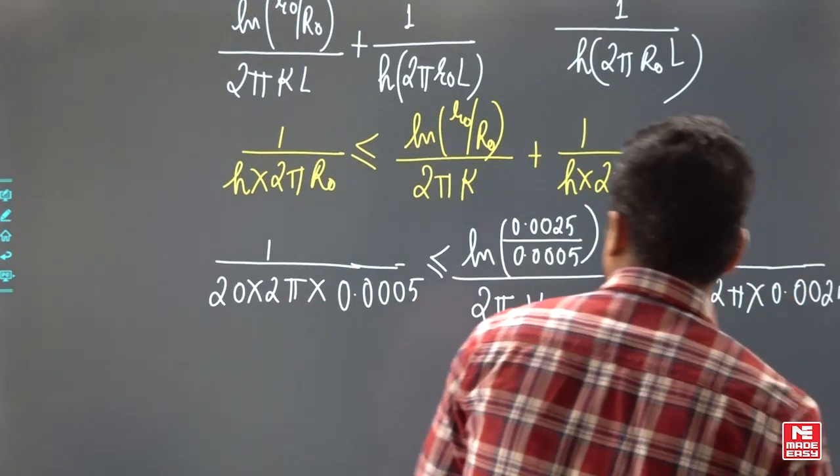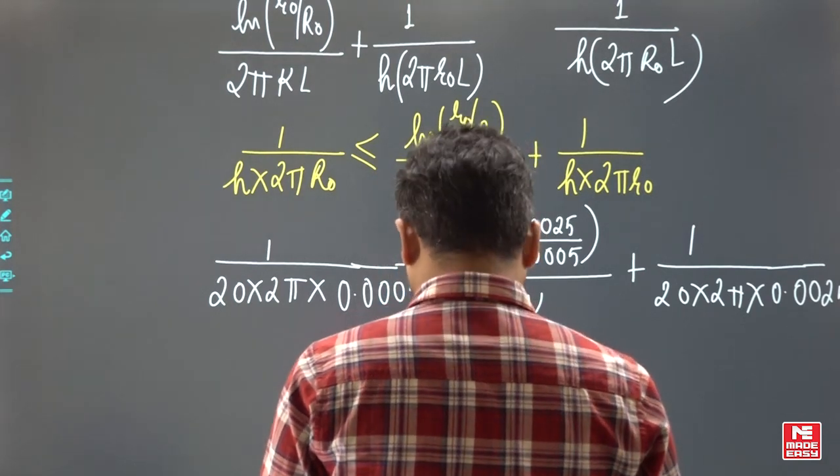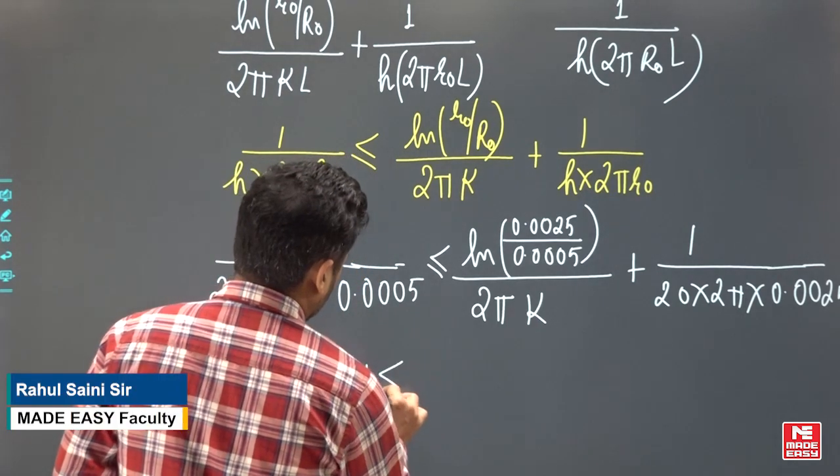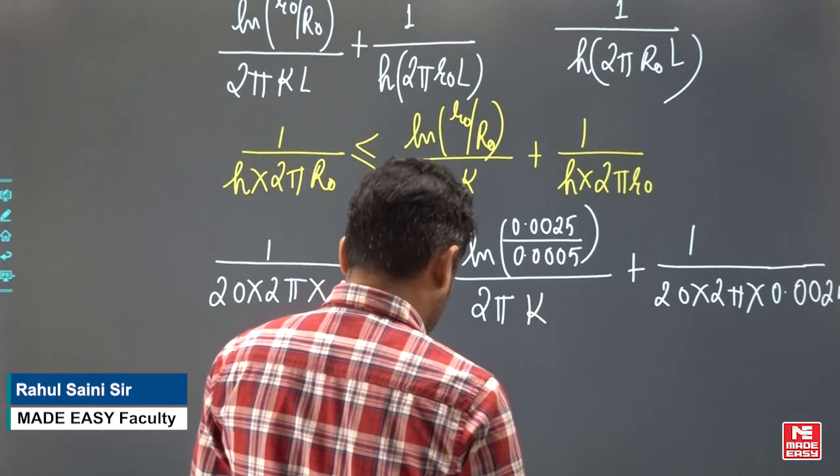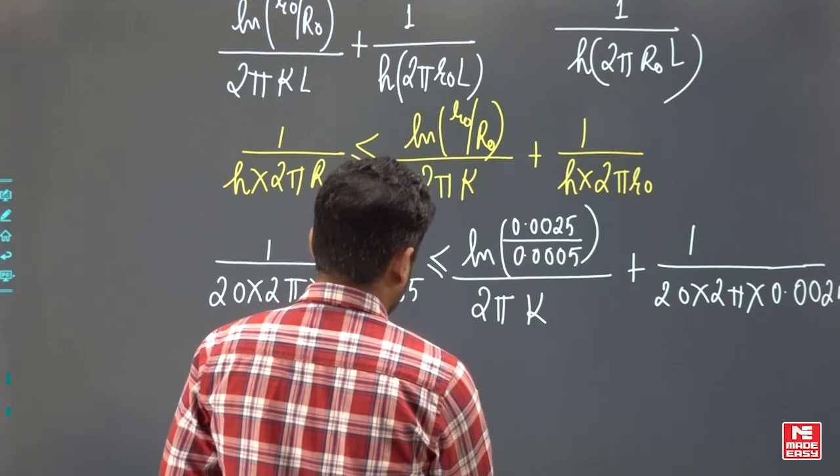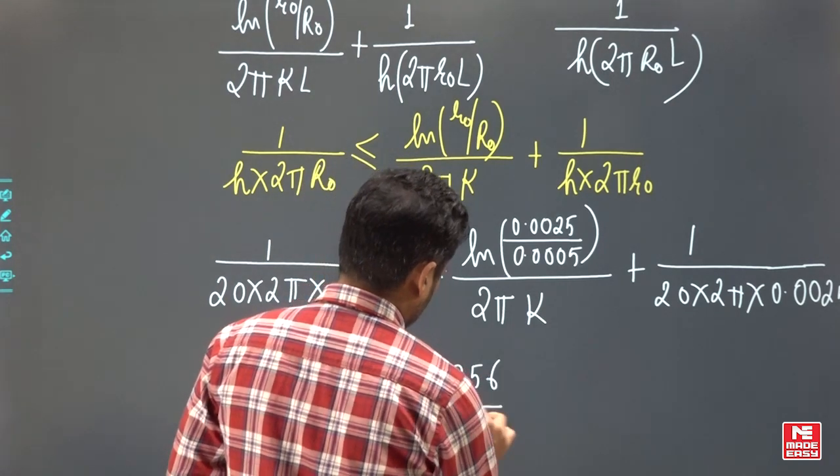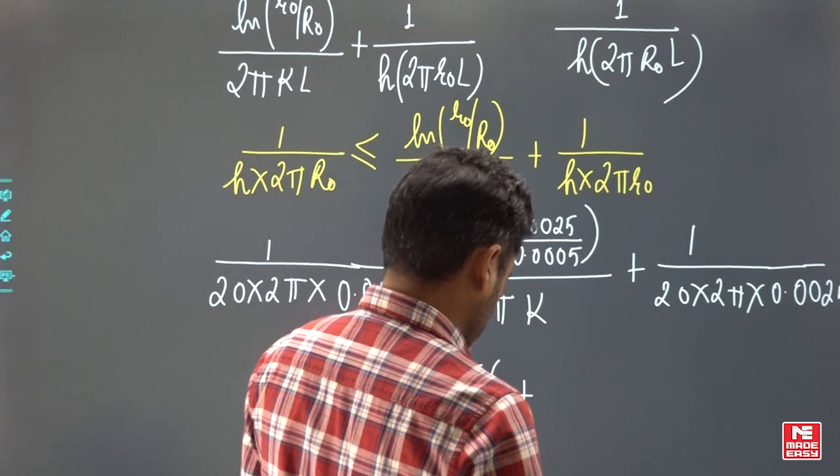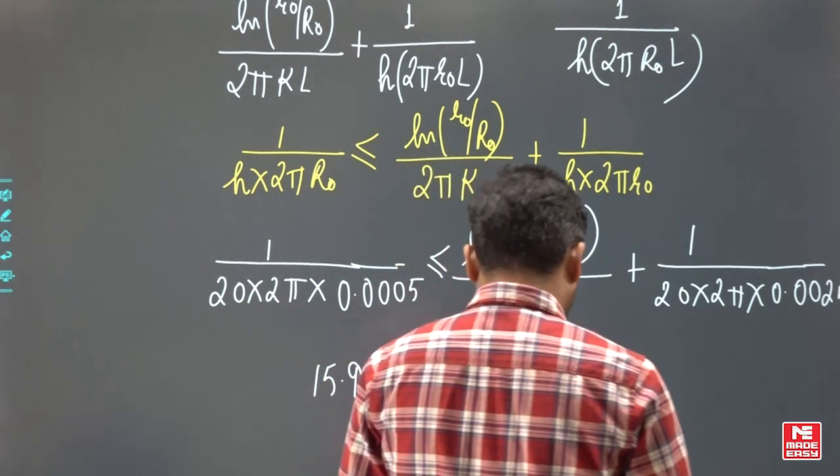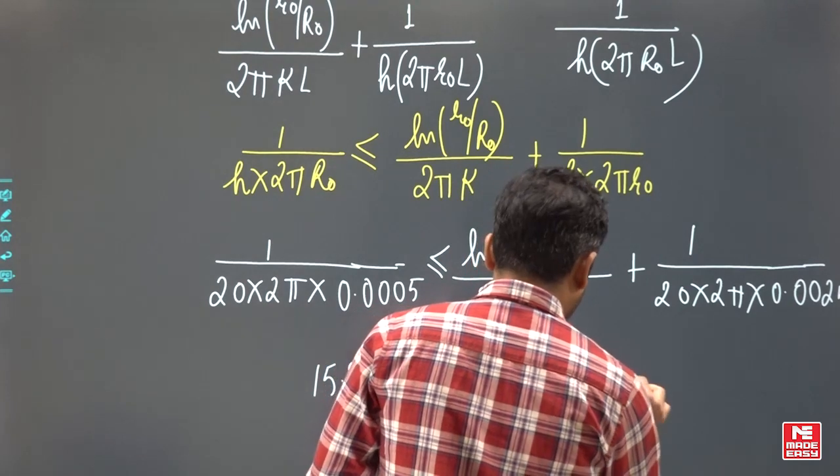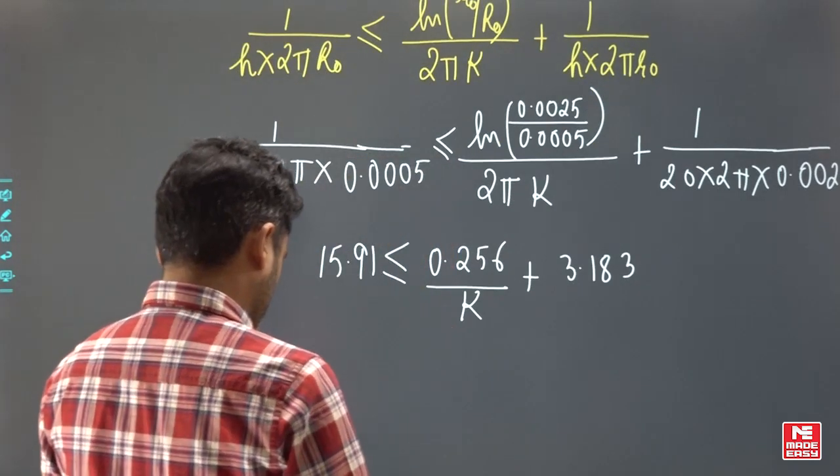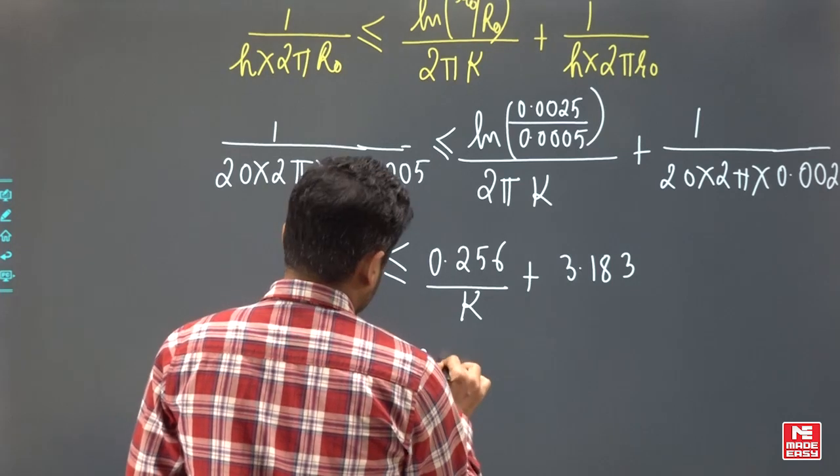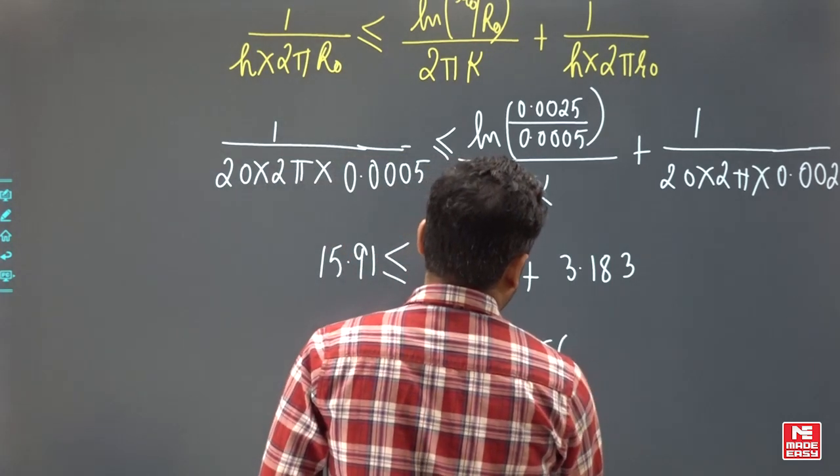I will solve the numerical value, I will put first. So it will come 20 into 2 into π into 15.91, 1.256 by K, 3.183. So this will come 12.726 less than equal to 0.256 by K.